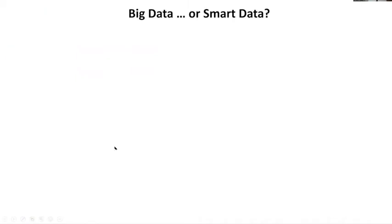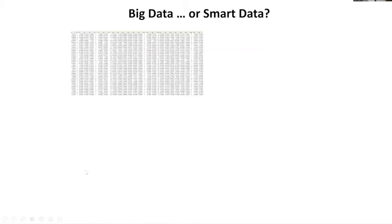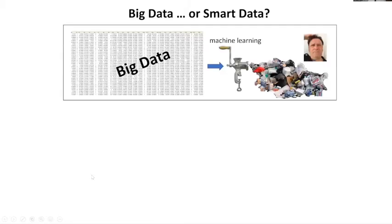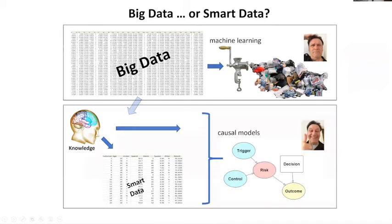What we argue for is a smart data approach rather than a big data approach. If you focus on big data and machine learning algorithms alone, you might end up with garbage. Whereas with a bit of causal knowledge and a smart data approach, you might end up with something useful. Thank you very much — I'm happy to take questions.